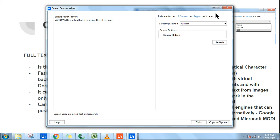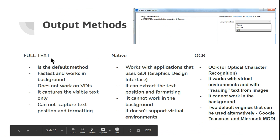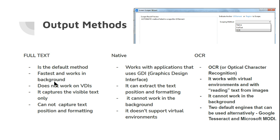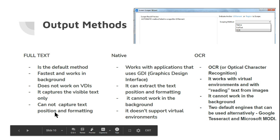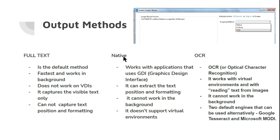Full Text is the default method — it is the fastest and works in the background. It does not work on Virtual Desktop Interfaces (VDIs). It captures the visible text only — whatever is visible on the screen it can capture. However, it cannot capture text position and formatting, such as color. It only captures plain text.